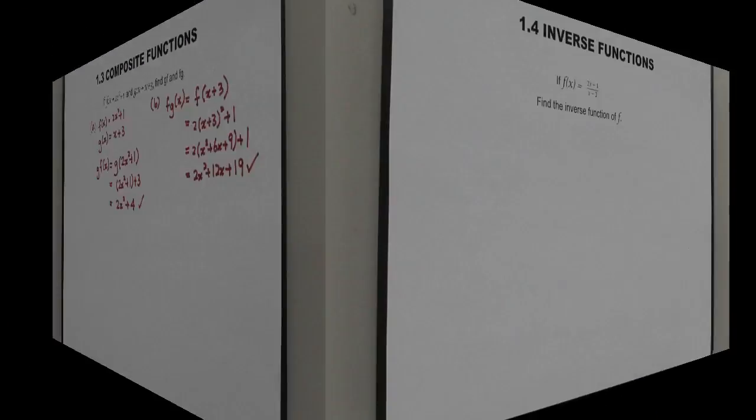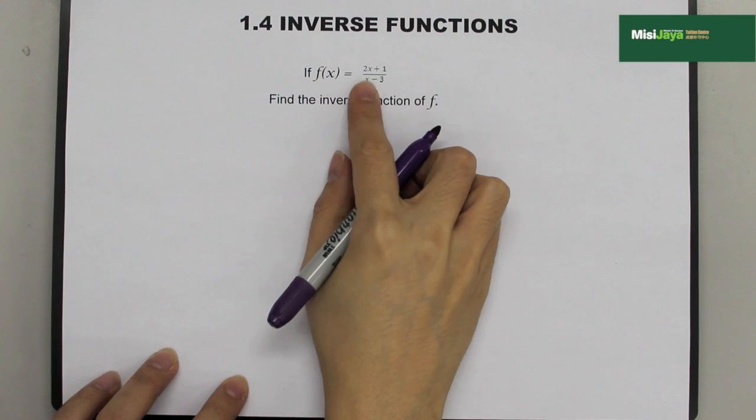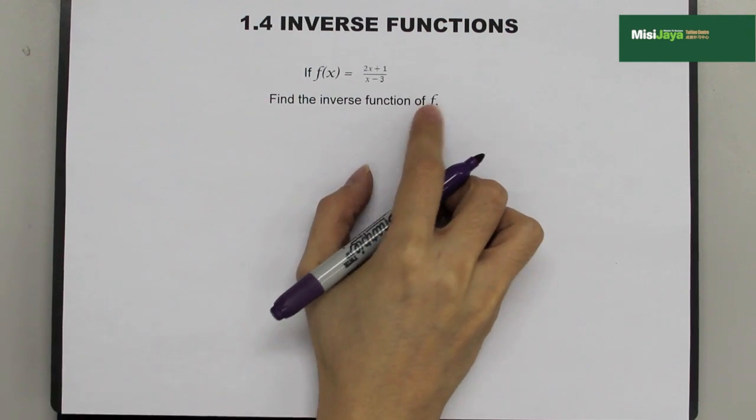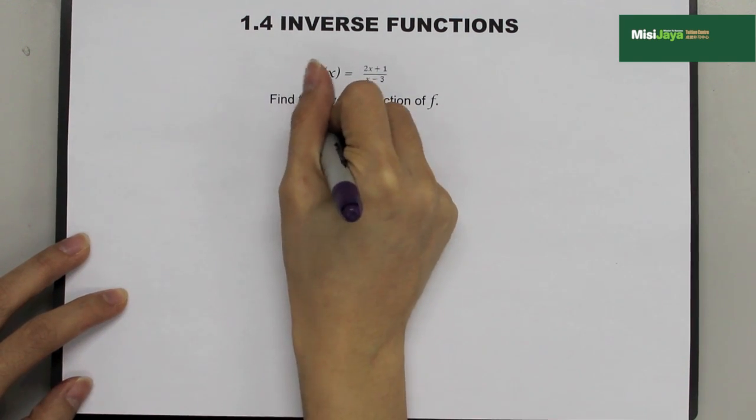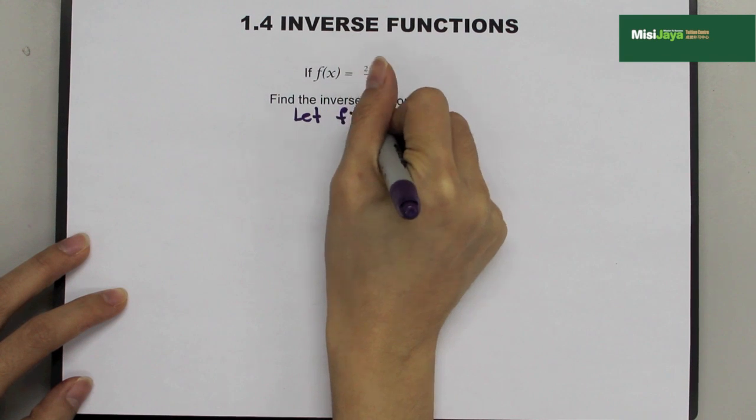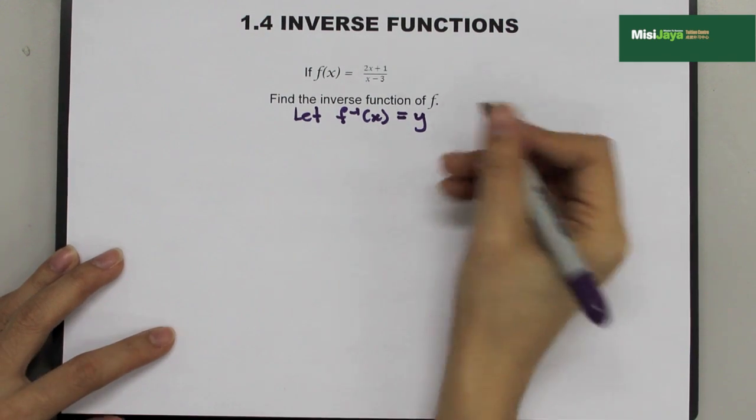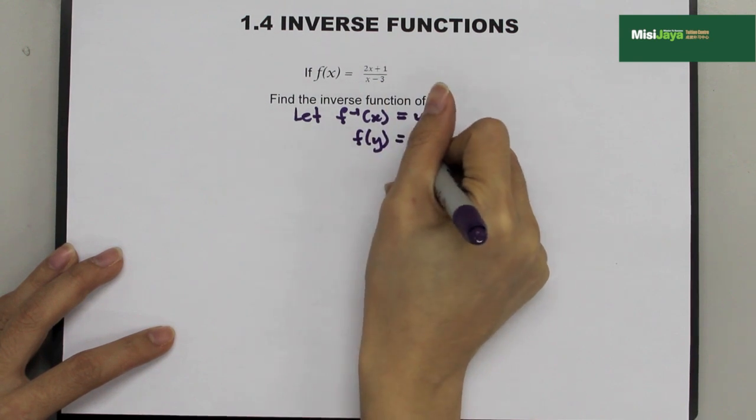Learn about inverse functions. Example, if f(x) = (2x + 1)/(x - 3), find the inverse function of f. So, we start off with: Let f⁻¹(x) = y. So, therefore, f(y) = x.